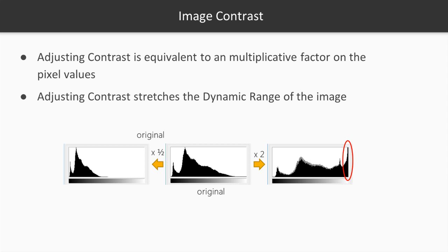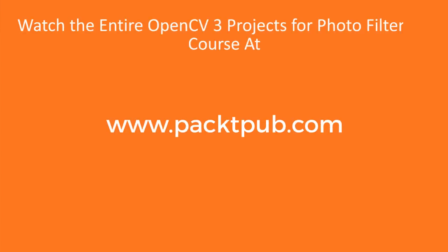As opposed to brightness, multiplication does change the dynamic range of the image. But as before, we must still beware of saturation or overexposure of the lighter pixels.